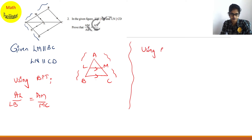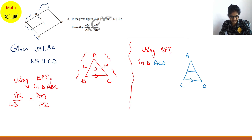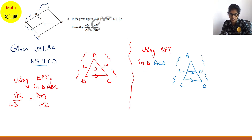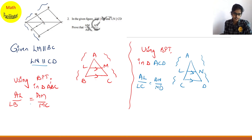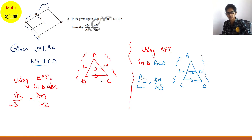Again using BPT, now in triangle ACD: LN is parallel to CD, so it divides the sides in the ratio AL/LC = AN/ND. This is equation 2. Now see — in triangle ABC, the sides are along lines A-L-C and A-M-B. So the correct ratio from BPT in triangle ABC is AL/LC = AM/MB.